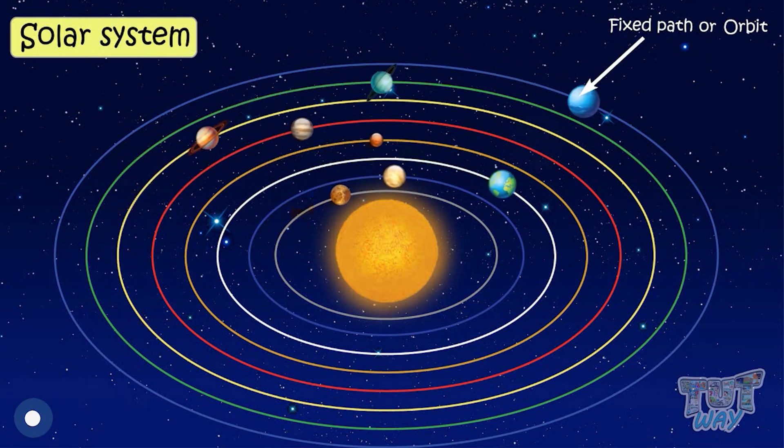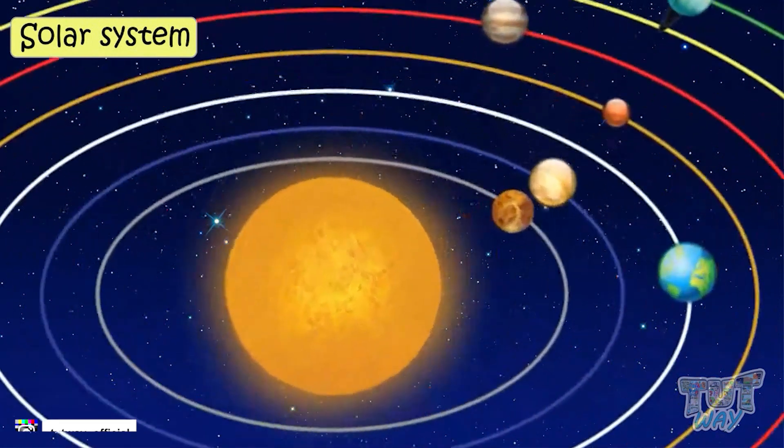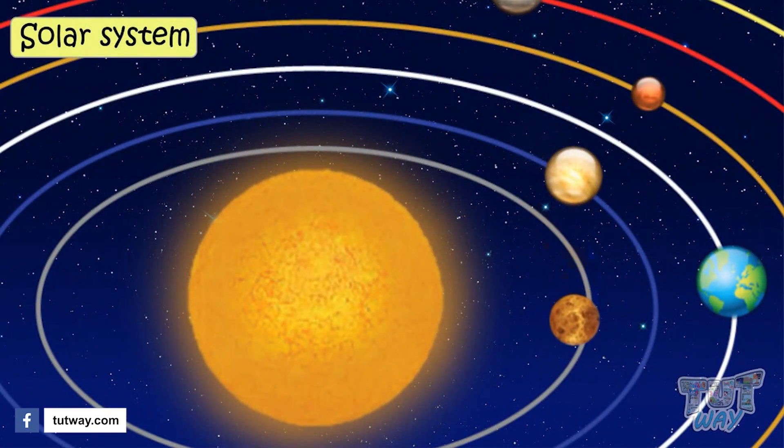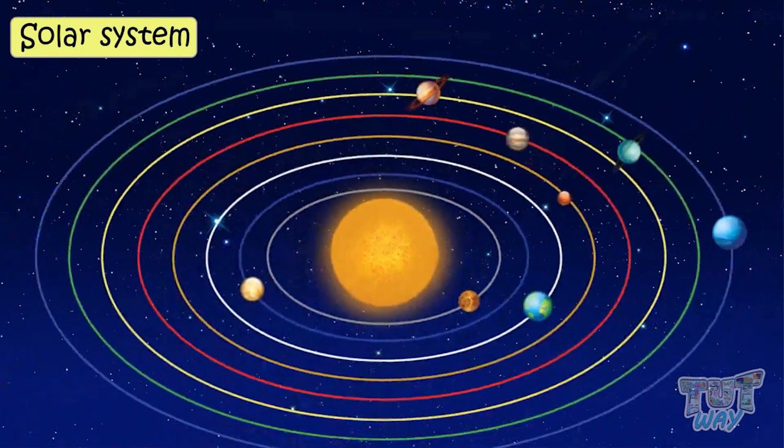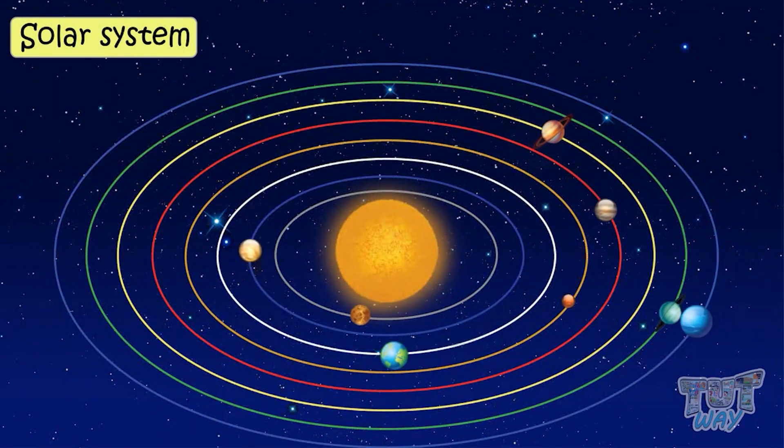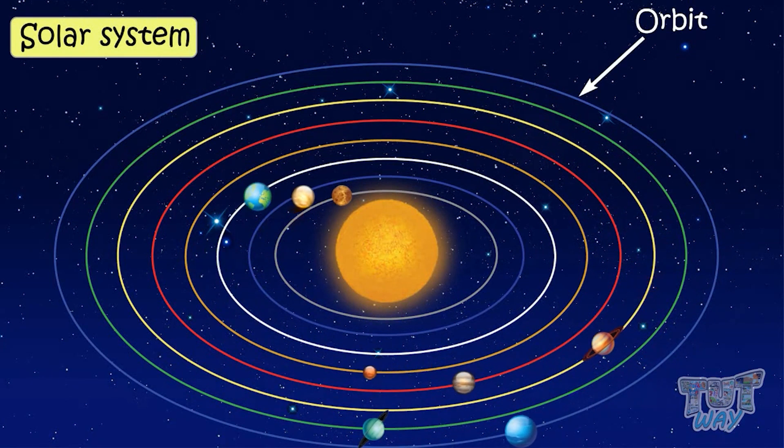Each planet has its own orbit, like Mercury will move only on this orbit. Venus will move only on this orbit. Likewise, all planets move in their fixed paths called orbits. They never move out of their path.